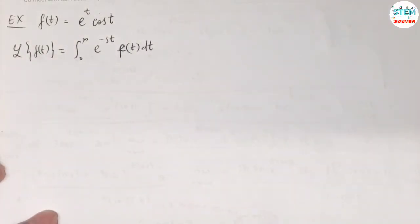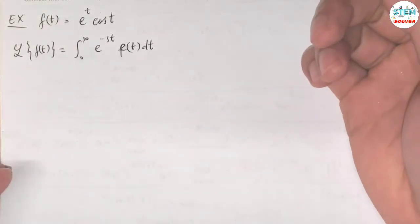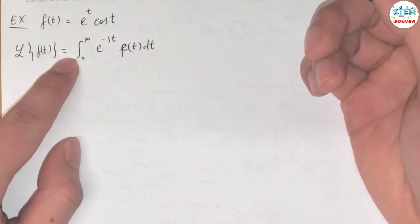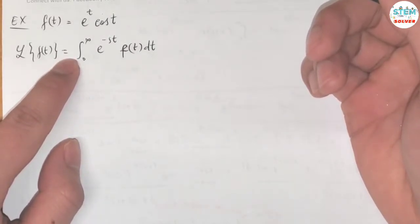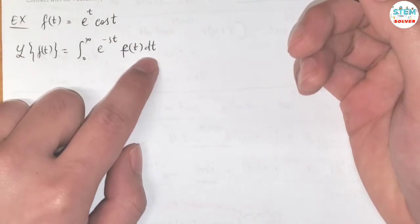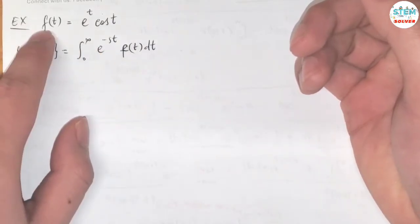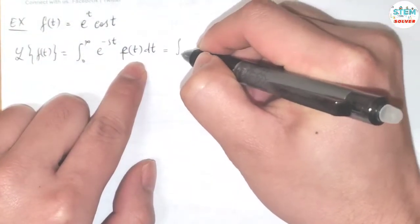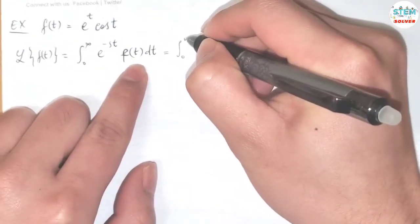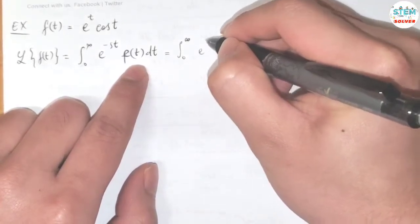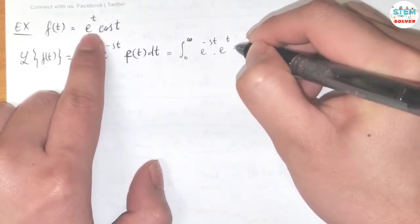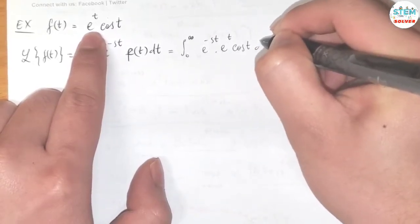We want to find the Laplace transform of e^t · cos(t). By the definition, the Laplace transform of f(t) is equal to the integral from 0 to infinity of e^(-st) · f(t) dt. So whatever f(t) is, you just plug it in here. That gives us the integral from 0 to infinity of e^(-st) · e^t · cos(t) dt.